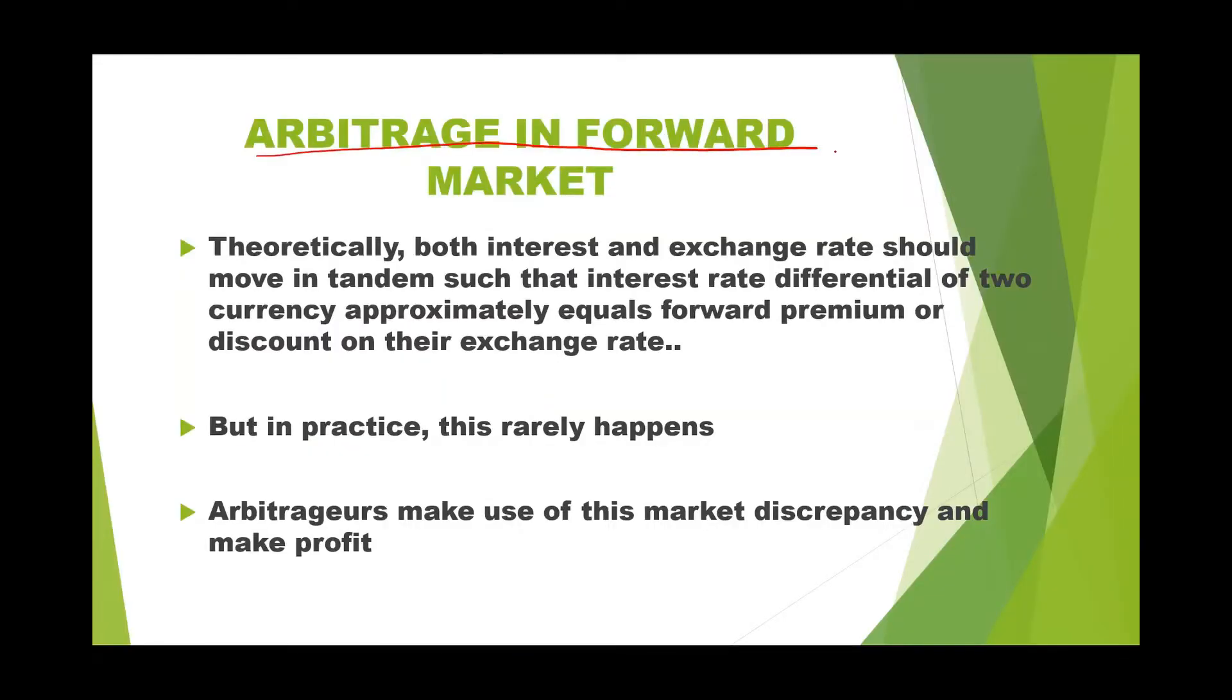Now, arbitrage in forward market. Theoretically, both interest and exchange rate should move together such that the interest rate differential of two currencies equals to premium or discount of their exchange rate. For example, Indian interest rate is 12% whereas US interest rate is 8%. The difference is 4%. Theoretically, this should equal to the forward premium or discount. But in practice, this rarely happens.